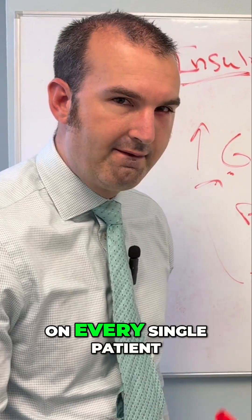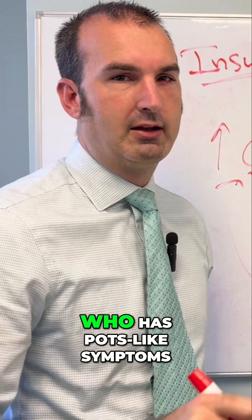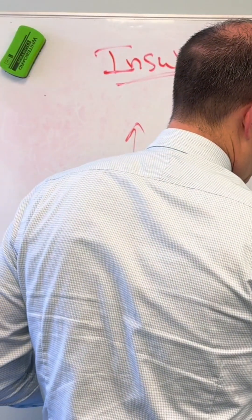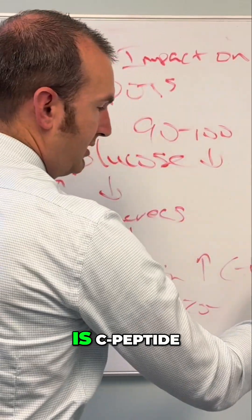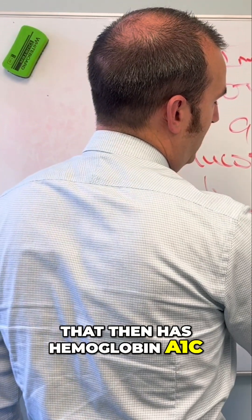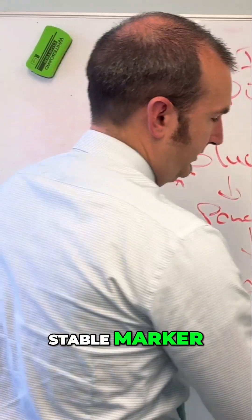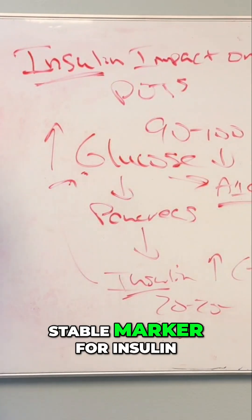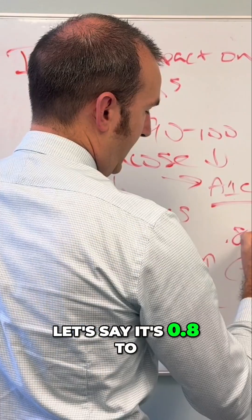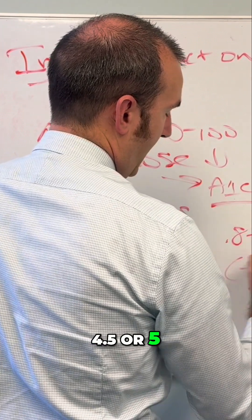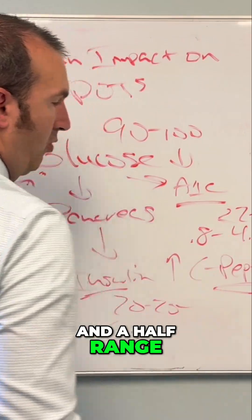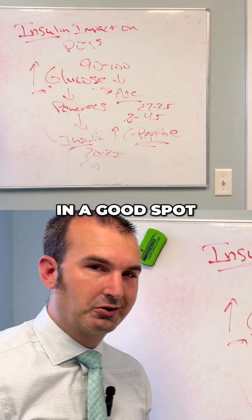It should be performed on every single patient who has POTS-like symptoms. Now another marker that goes with insulin, that looks at insulin from a different angle, is C-peptide. In the same way that you have glucose and then hemoglobin A1c as a more stable marker, C-peptide is a more stable marker for insulin. The C-peptide range — let's say it's 0.8 to 4.5 or 5 — I really like people at about the two or two and a half range or below, because we want to make sure that you're in a good spot.